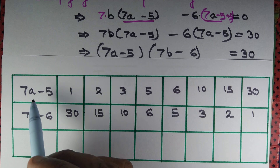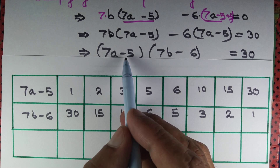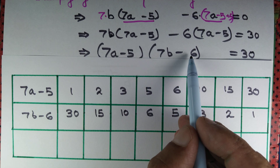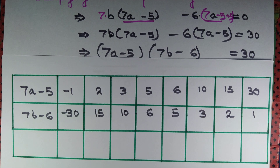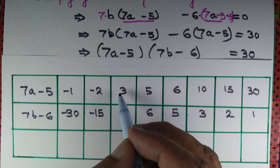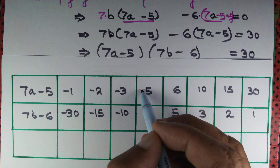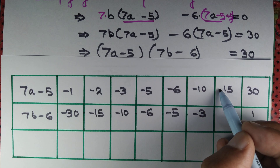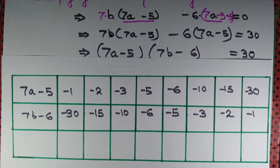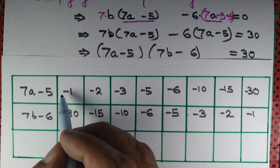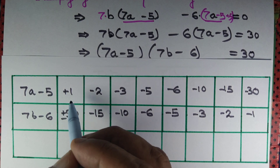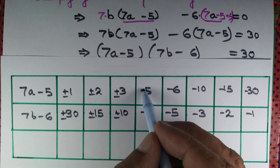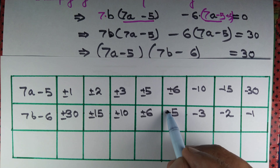For negative factors, if 7a - 5 = -1, then 7b - 6 = -30. Similarly: (-2, -15), (-3, -10), (-5, -6), (-6, -5), (-10, -3), (-15, -2), (-30, -1). Both factors must have the same sign since their product is positive.